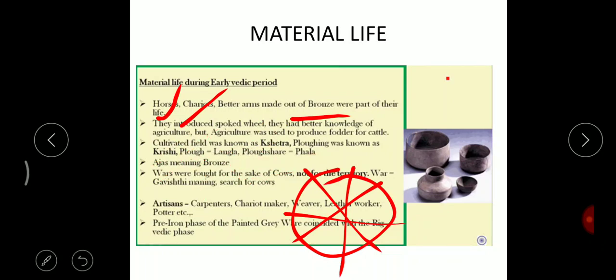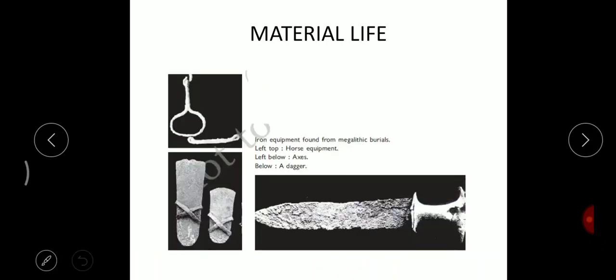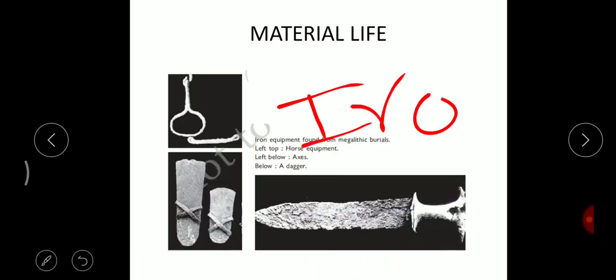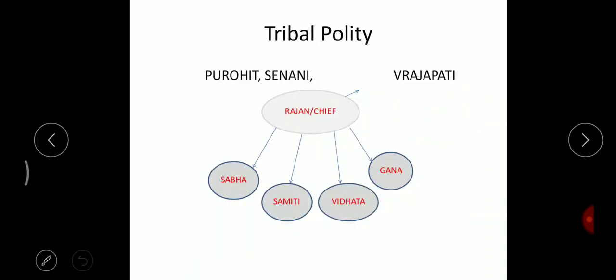Wars were fought for cows and the war was called Gavisthi. They also used iron and knew how to make iron, using metals made of iron as seen from archaeological findings.